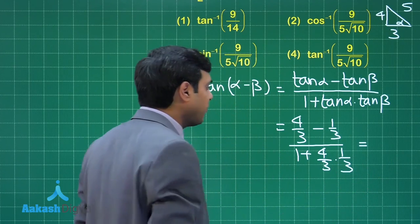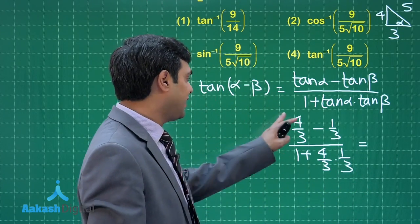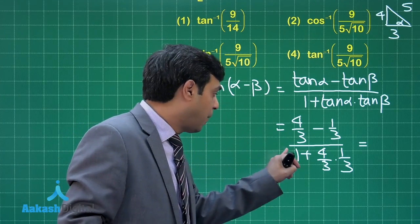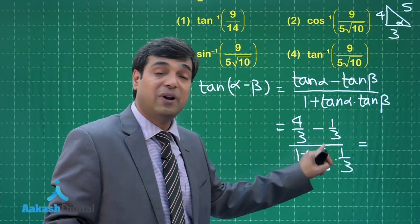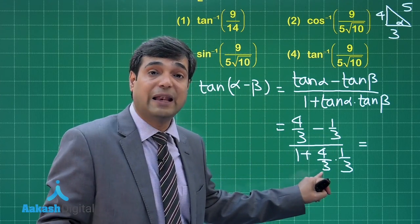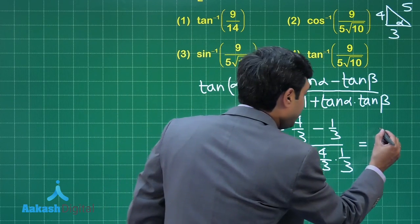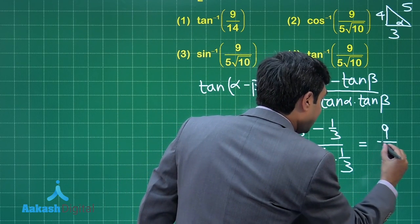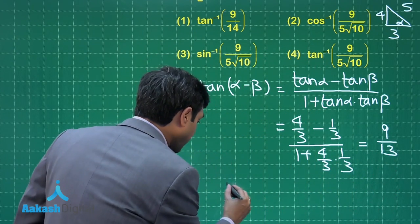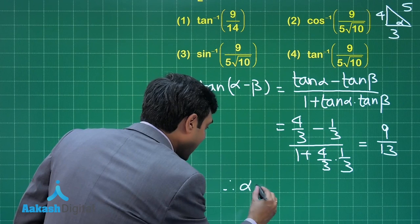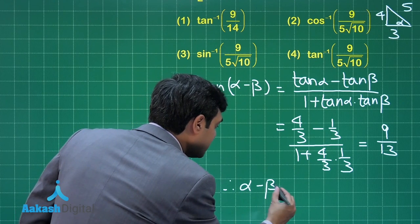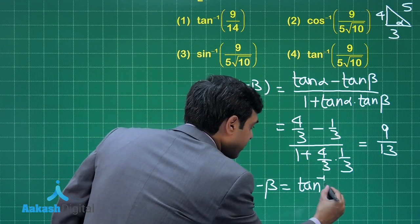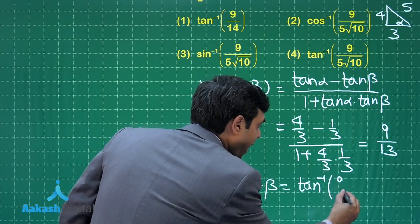So tan(α − β) = (4/3 − 1/3) / (1 + (4/3)(1/3)) = 1 / (1 + 4/9) = 9/13.